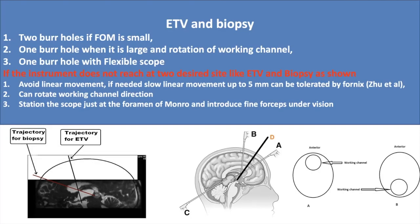ETV can be used in association with biopsy. In such cases, two burr holes may be required if the foramen of Monro is small. One burr hole may be used when the foramen of Monro is large and you rotate the working channel, or when a flexible scope is available. When instruments cannot reach two desired sites — such as for ETV and biopsy shown in this diagram — what are the options?